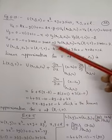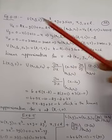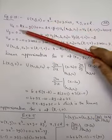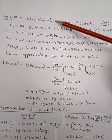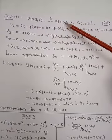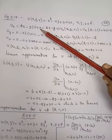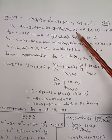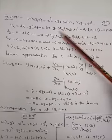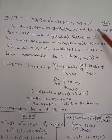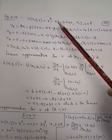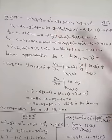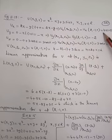First, we find ∂u/∂x. Differentiating u with respect to x partially: x² becomes 2x, then minus y into x where differentiation is 1, plus 3sin(z) where z is a constant so it gives 0. So ∂u/∂x = 2x - y. Therefore ∂u/∂x at (2, -1, 0): substituting x=2 and y=-1 gives 2×2 - (-1) = 4 + 1 = 5.